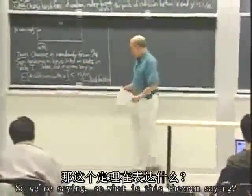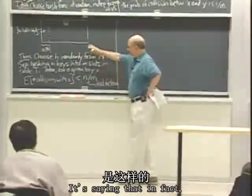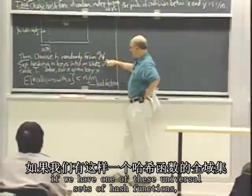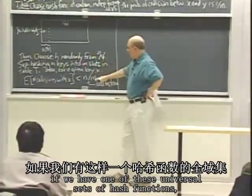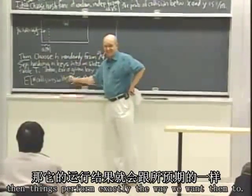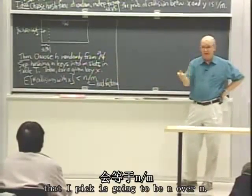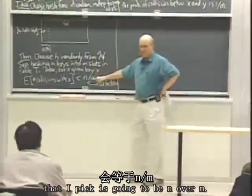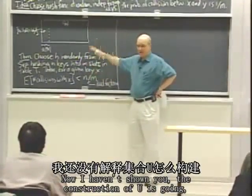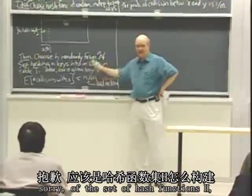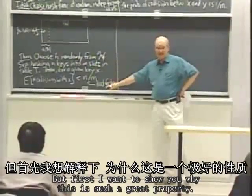So what is this theorem saying? It's saying that if we have one of these universal sets of hash functions, then things perform exactly the way we want them to. Things get distributed evenly. The number of things that are going to collide with any particular key that I pick is going to be n over m. That's a really good property to have. Now the construction of the set of hash functions H will take us a little bit of effort. But first I want to show you why this is such a great property, and that basically is this theorem. So let's prove this theorem.